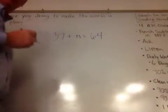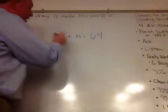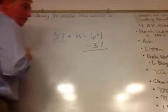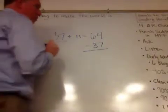Now, the easiest way to solve this is to just go ahead and take 37 and subtract it from 64. 37 take away, or sorry, 64 take away 37.